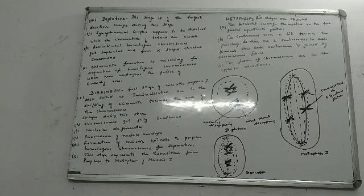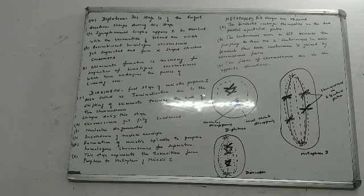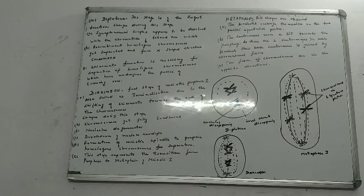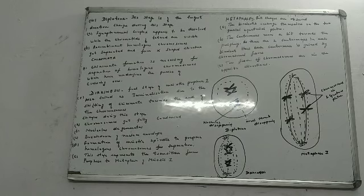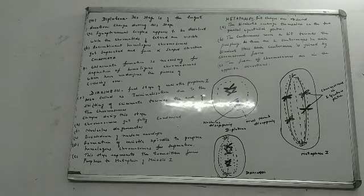This chiasmata formation — why does this X-shaped structure form? This is necessary so that the homologous chromosomes can separate. It is necessary for the separation of homologous chromosomes which have undergone the process of crossing over. After crossing over, they have to separate from each other. That is the reason this X-shaped structure, chiasmata, is formed.